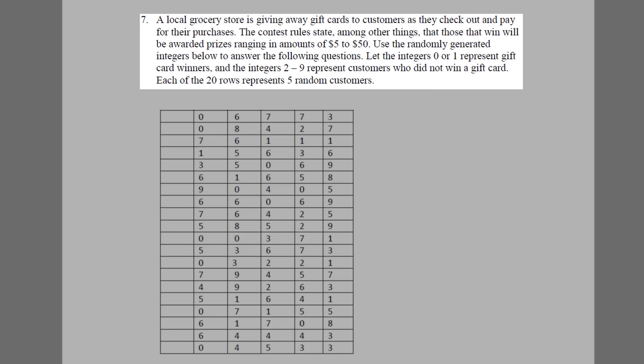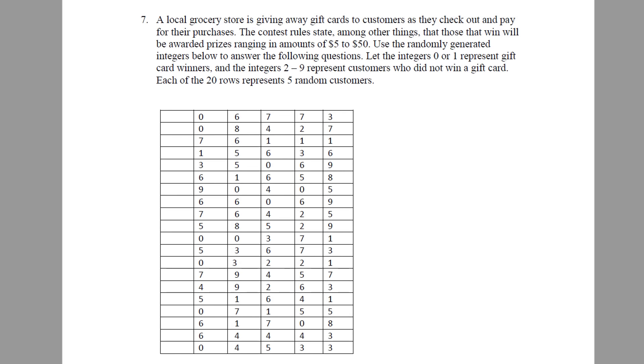Next, a grocery store is giving away gift cards to customers as they check out. They'll receive a gift card with an amount from $5 to $50. We will use some random numbers below to generate who the winners are. Let the integers 0 and 1 represent gift card winners and 2 through 9 represent customers who did not win a gift card. Each of the 20 rows represents 5 random customers.